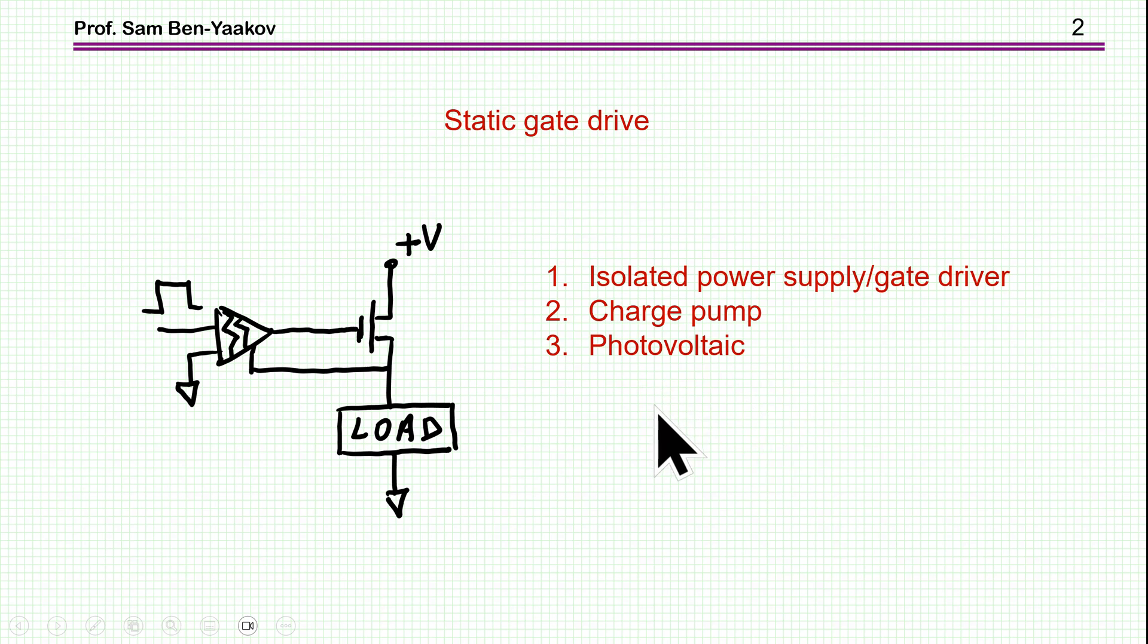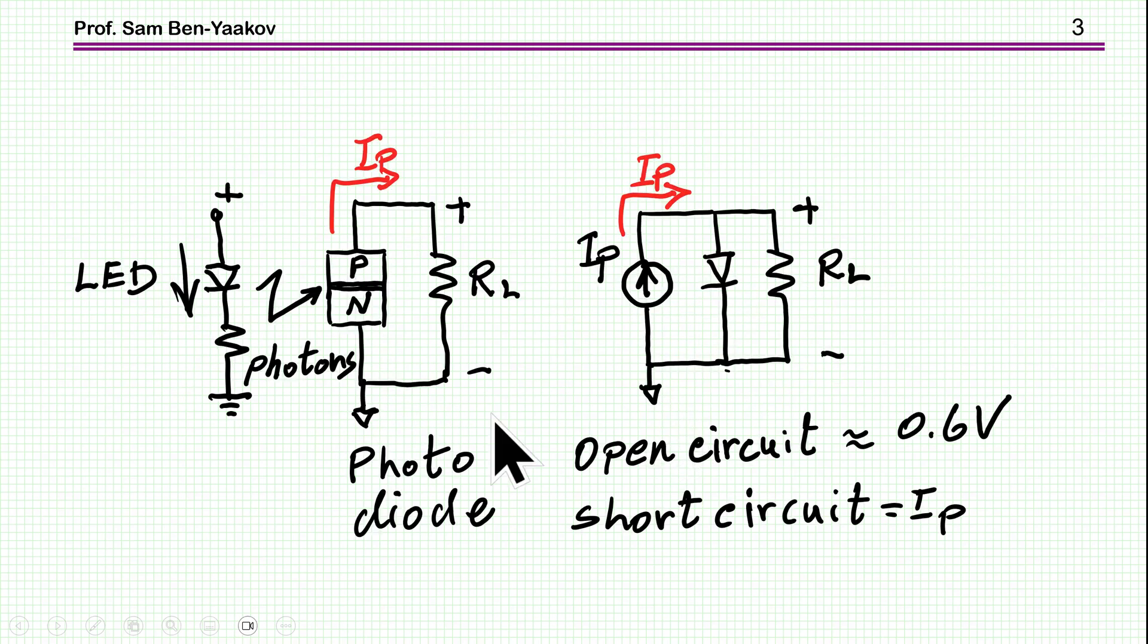So the alternatives are to use an isolated power supply and isolated gate driver, or a charge pump type driver, or a charge pump power supply with a driver. And then there is another solution, which is a photovoltaic driver, which I'm going to talk about in this presentation. This driver is basically an arrangement of a light emitting diode and an array of photodiodes. I'm showing here one photodiode.